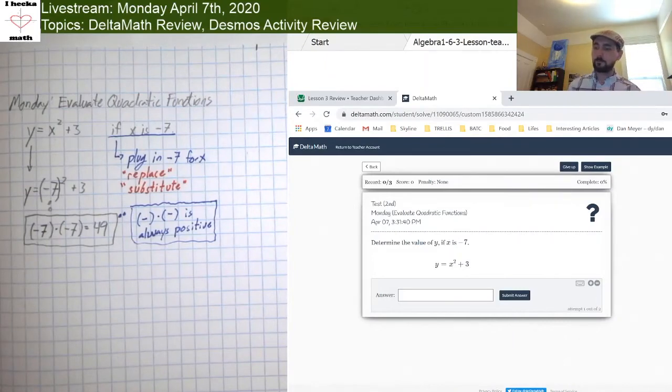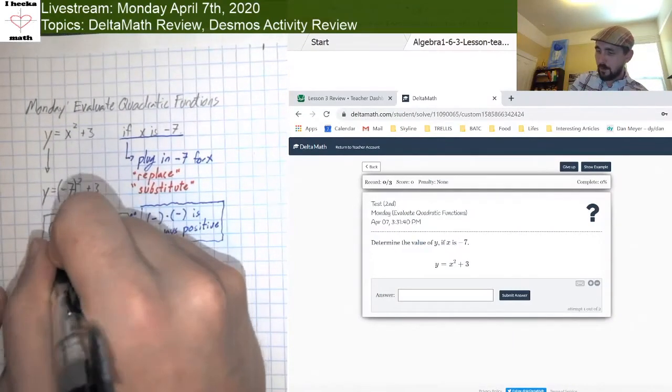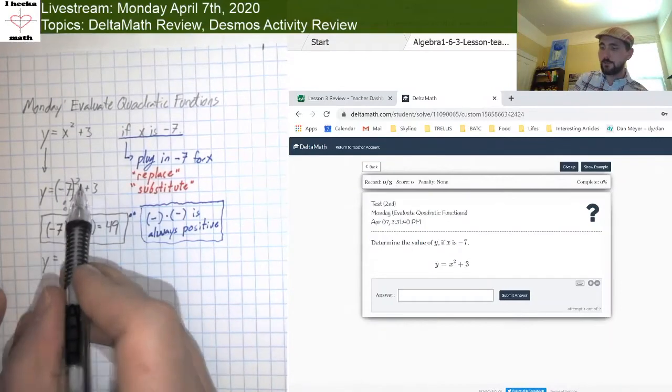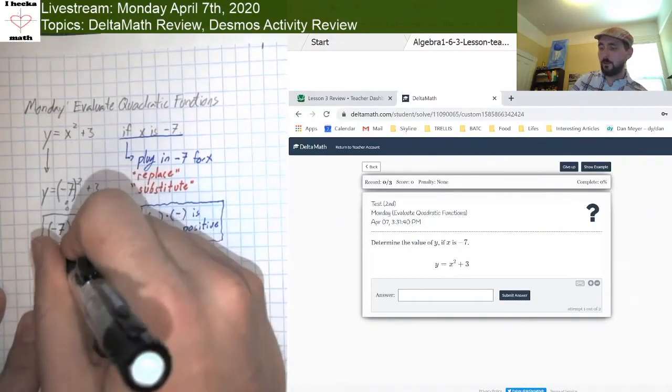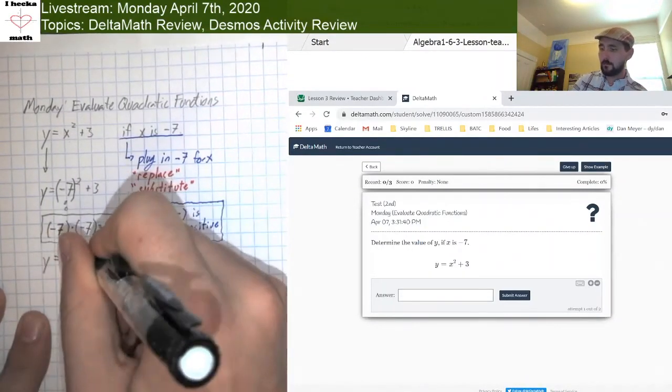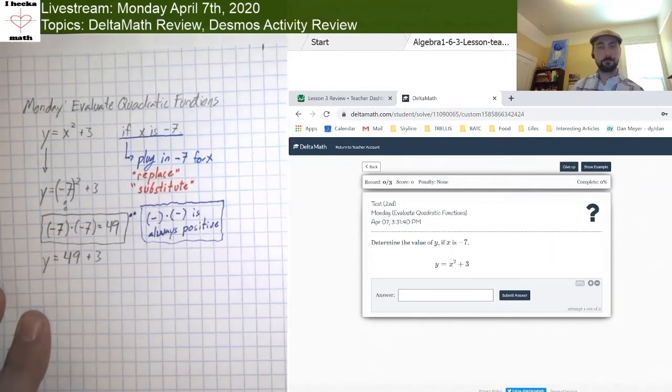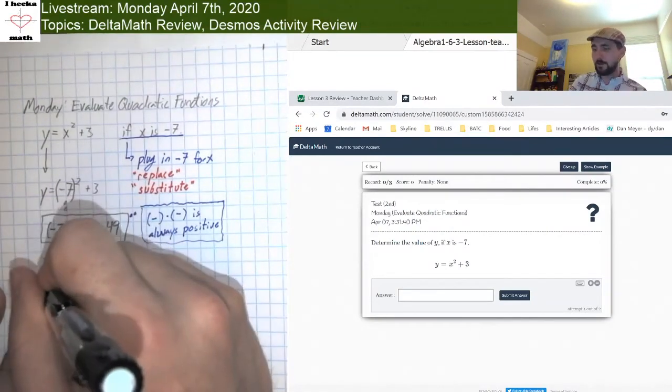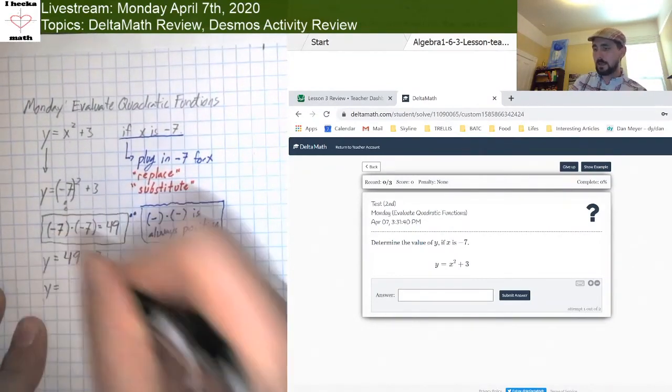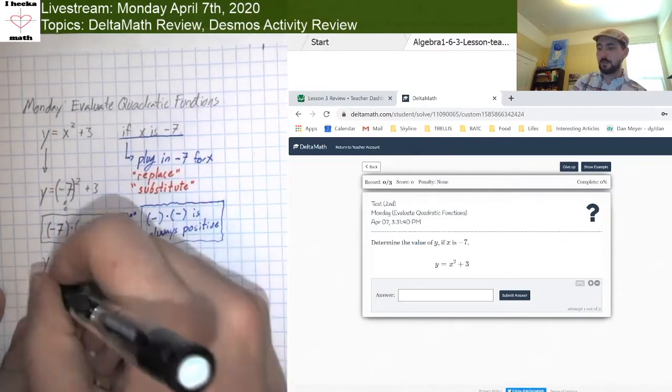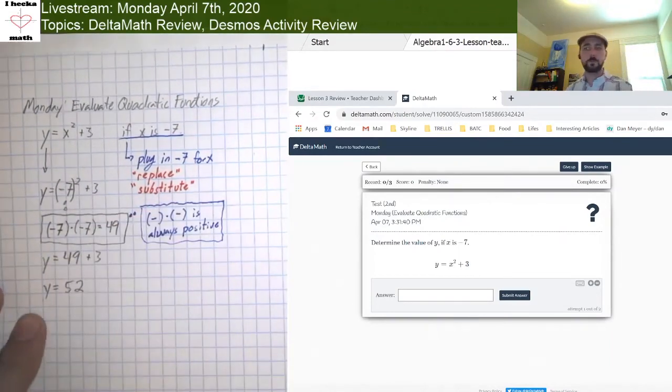Okay. So we keep going. Copy down the y equals, negative 7 squared we know is 49 plus 3. Easy. And then final step, y equals 49 plus 3 is a total of 52, right?